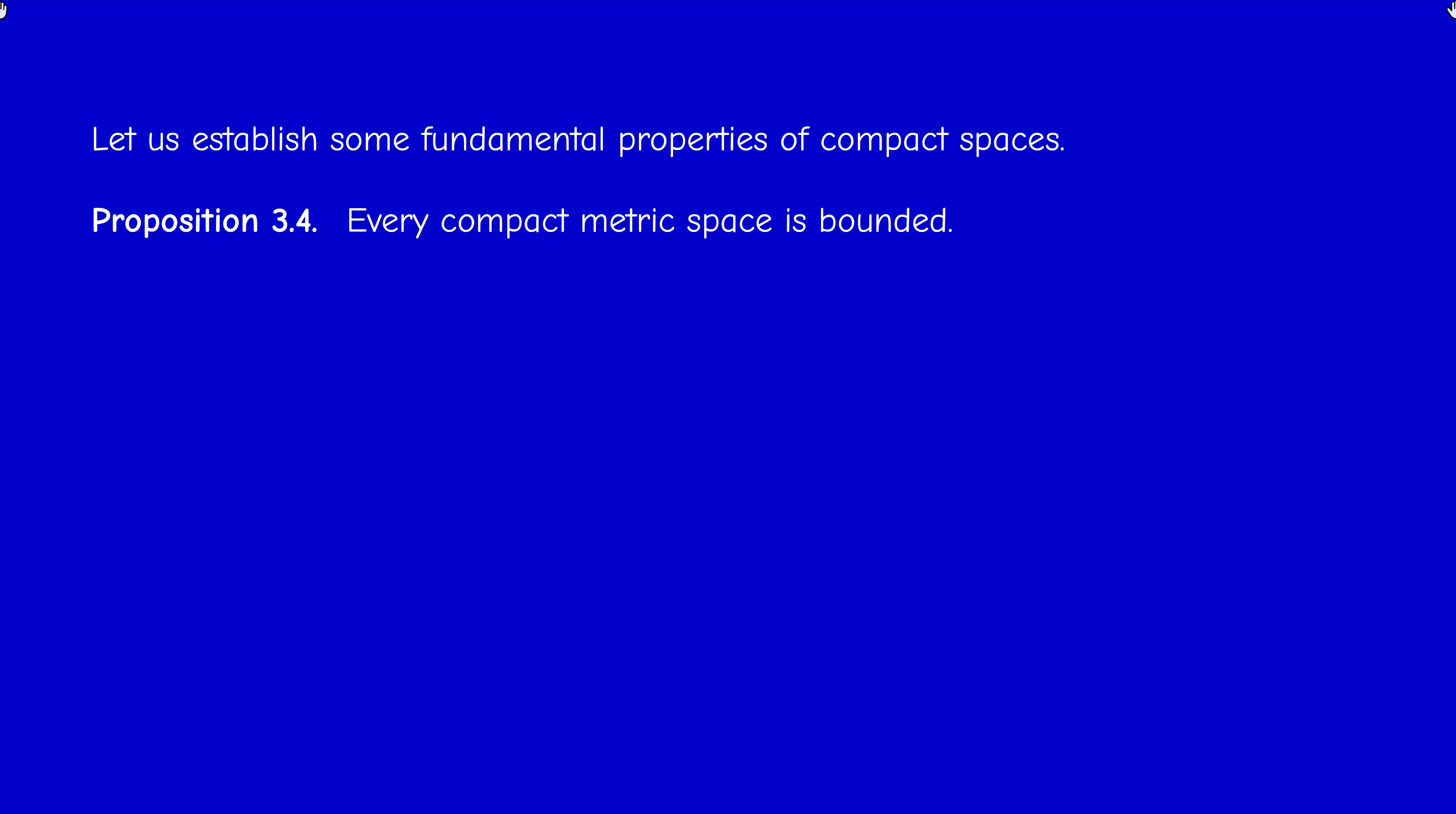Welcome back. This is the third video of section 3.1 in which I'm going to establish some fundamental properties of compact spaces. First result, every compact metric space is bounded. We cannot formulate this for a general topological space because there's no concept of boundedness in a topological space.